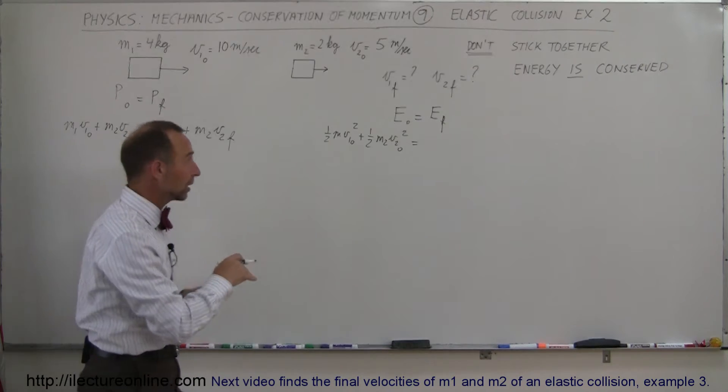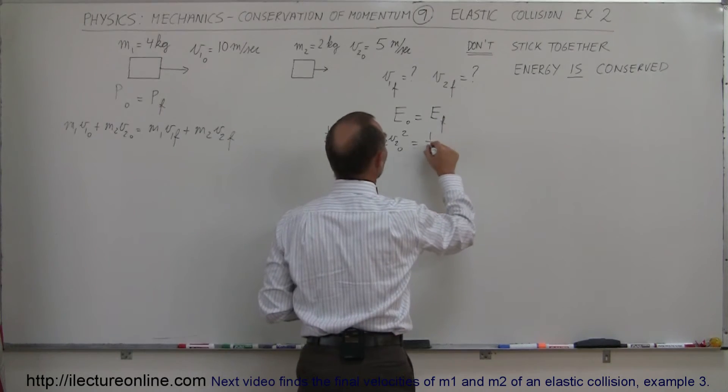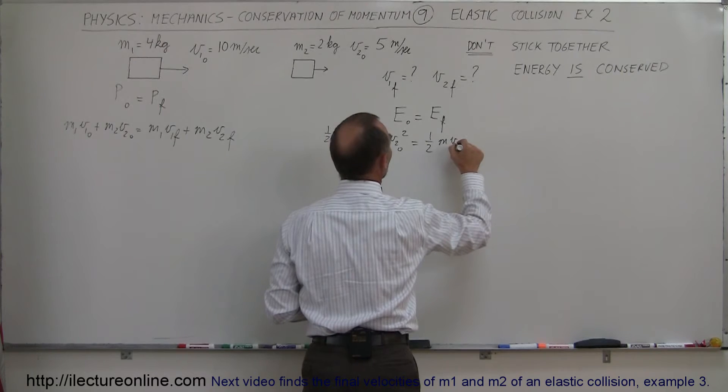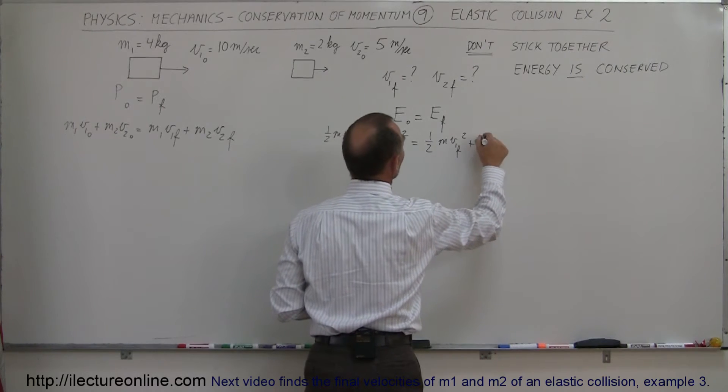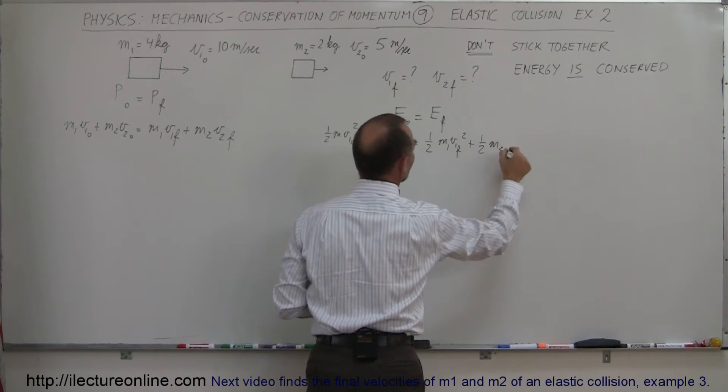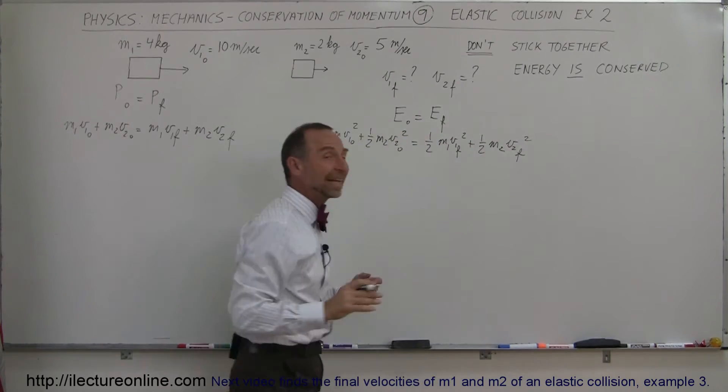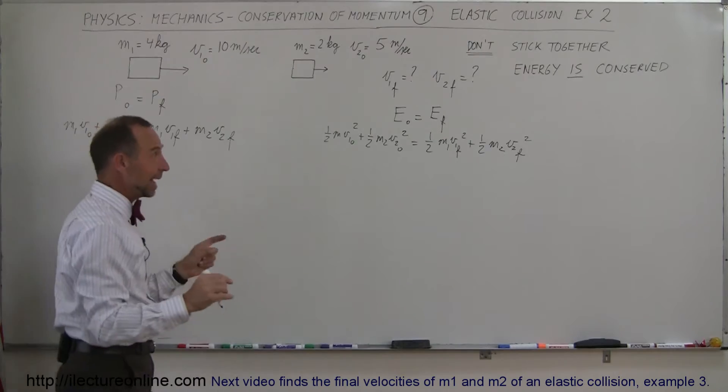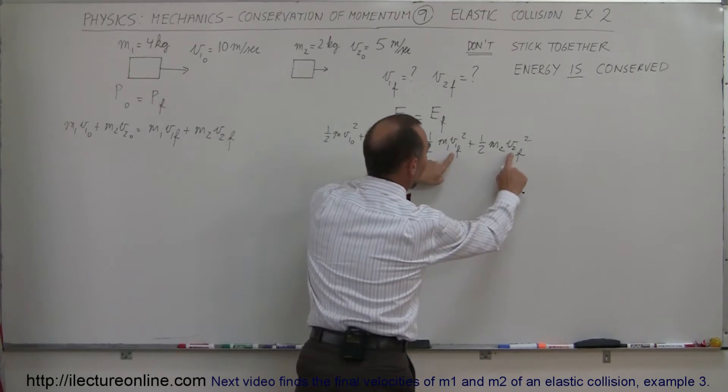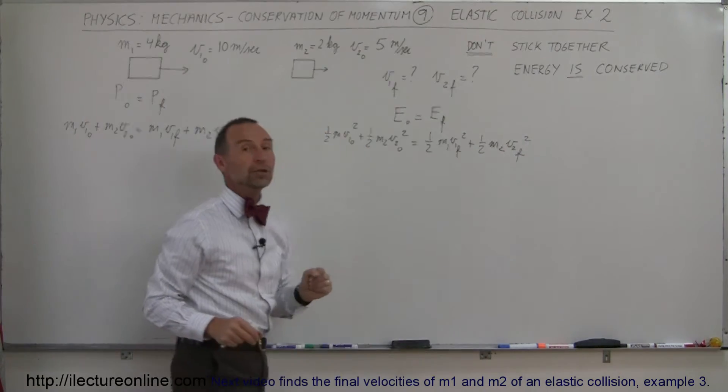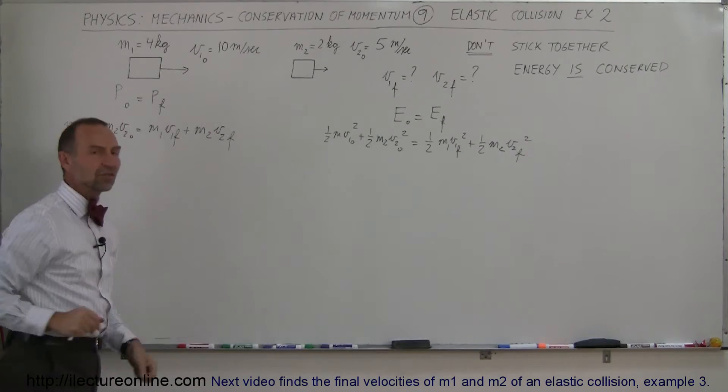That's why we need the second equation because here we can write that one half M1 V1 initial squared plus one half M2 V2 initial squared, that would be the kinetic energy of both objects before the collision, must equal one half M1 V1 final squared plus one half M2 V2 final squared. So that would be the sum of the kinetic energies after the collision. They both have V1 final and V2 final, both unknown. So we need to solve these equations simultaneously.